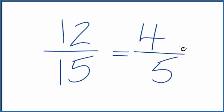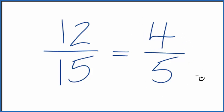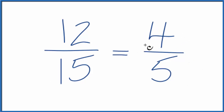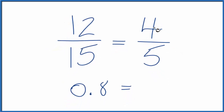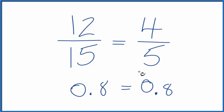We can't reduce this any lower. These are equivalent fractions. If you divide 4 by 5 you get 0.8, and 12 divided by 15 also gives 0.8 — so they're the same value. We've simplified 12 fifteenths to 4 fifths, but the value is the same.